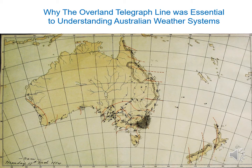Here we have one of Charles Todd's maps dated 9 a.m., Monday the 17th of March 1884, which we'll use to show how telegraphy was the technology that allowed these maps to be drawn. You can see some sparse handwritten numbers on the map.